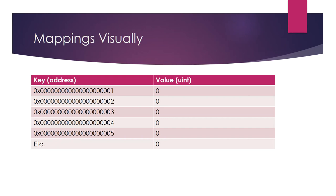Visually, a mapping can kind of look like a table, but that's not how it looks in memory. You can think of a mapping as a hash table, but do not ingrain that in your head because it's not a hash table. What happens with a mapping is it really doesn't store every possible key value or any key values at all, but depending on the type for the key, that key value will represent a position in memory of where the value is stored.